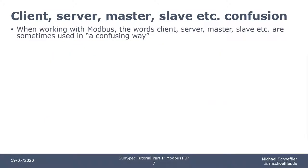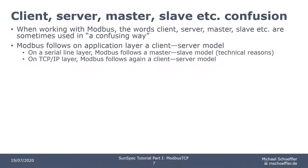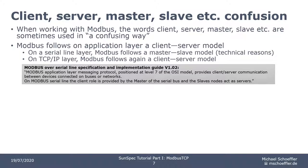If you start working with Modbus, you might get confused when you come across the terms client, server, master, and slave. Unfortunately, they are not always used in a consistent way within the Modbus community. At the application layer, Modbus follows a client-server model. If the underlying communication protocol belongs to the serial line part, a master-slave model is used, which has technical reasons. If the underlying communication protocol is TCP/IP, Modbus uses again a client-server model. Modbus makes this clear in the serial line specification: the Modbus application layer messaging protocol, positioned at level 7 of the OSI model, provides client-server communication. On Modbus serial line, the client role is provided by the master of the serial line bus, and the slave nodes act as servers.